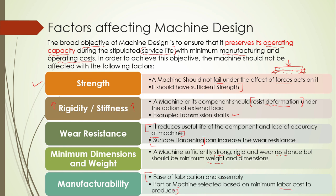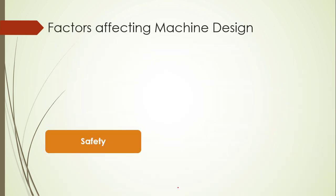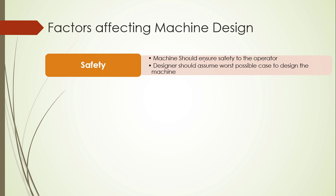That is called manufacturability. Next is safety — we will ensure the machine operates under safe conditions. For example, if one machine has a maximum acting load of 50 kN, we design it for a maximum of 200 kN — designing for worst-case loads.